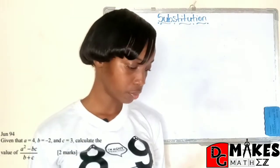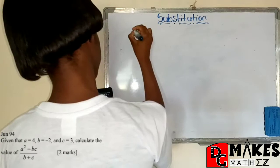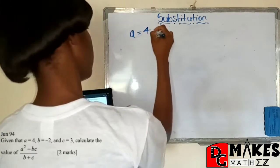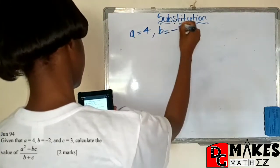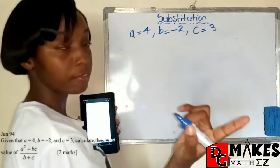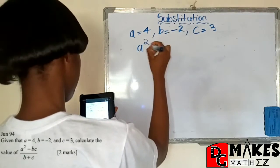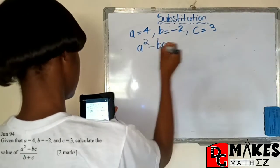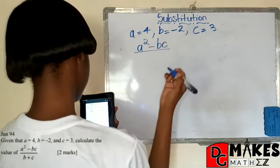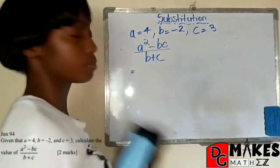All right, hope you are ready for our next question. Our second question reads, given that A is equal to 4, B is equal to negative 2, and C is equal to 3. We are going to find the value of, and this one is fractional now, A squared minus BC. All of that is being divided by B plus C. All right, simple.